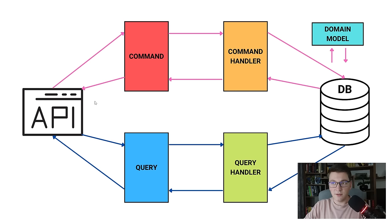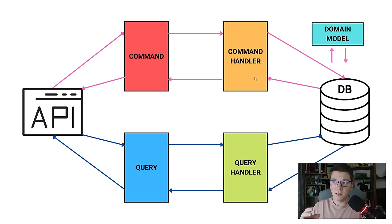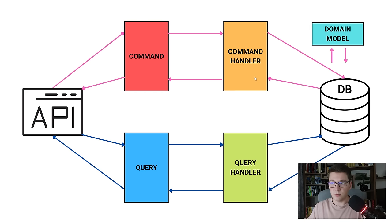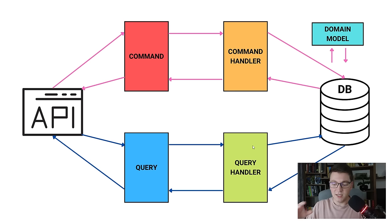Let me cover the two flows of data. We first have our API, which creates a command object and sends it using the mediator pattern to the appropriate command handler. The command handler is responsible for reading the domain model from the database, applying the required changes, and then persisting those changes and returning the result. On the other side, when initiating reads, we create a query object which is sent to the appropriate query handler, which reads from the database and returns the appropriate response to the API.